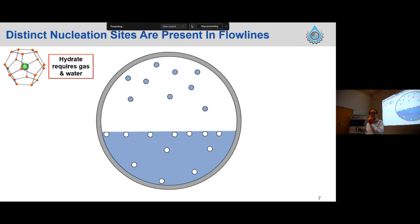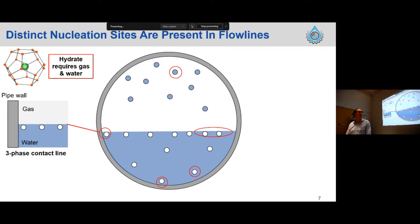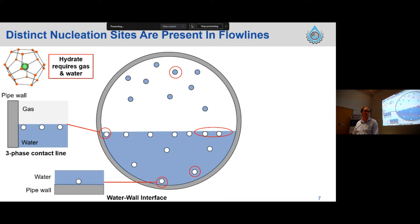If we want to probe where these nucleation sites are in our flowline, thinking first about what we need to form hydrate — which is gas and water — nucleation sites are places where gas and water are present together. This is a cross-sectional schematic of what your pipeline might look like. We have some water droplets entrained in the gas phase and some gas either dissolved or as bubbles in a continuous liquid phase on the bottom. The first region is where gas and water phases are in contact with the pipe wall — we call this the three-phase line. We also have where a gas bubble or dissolved gas is near the pipe wall — we call that the water-wall interface.